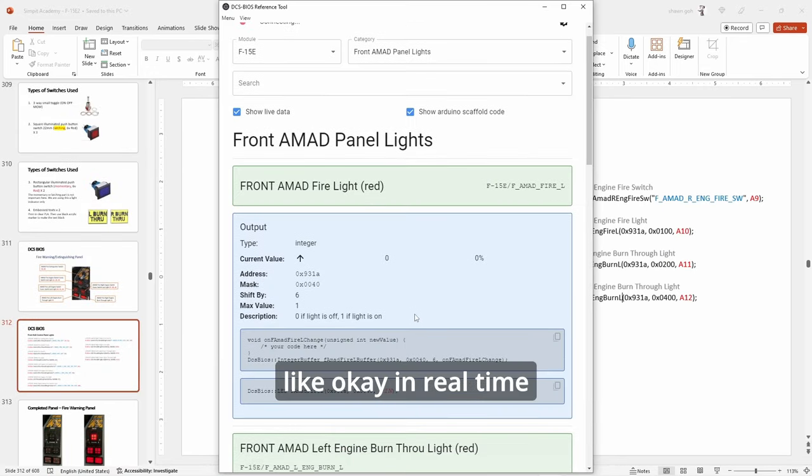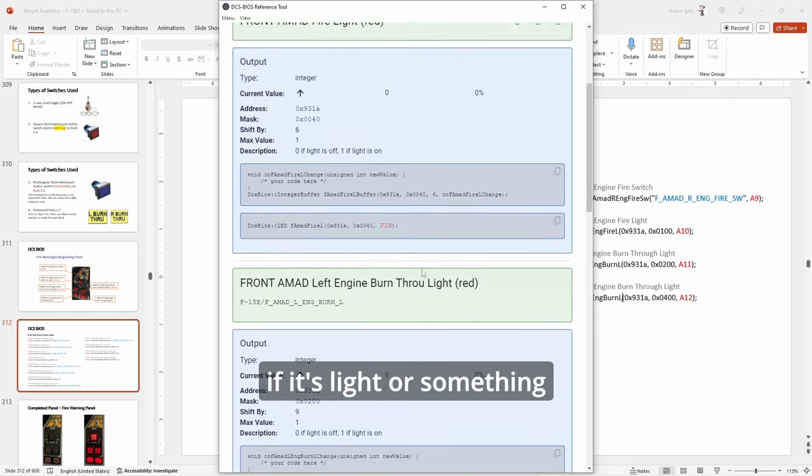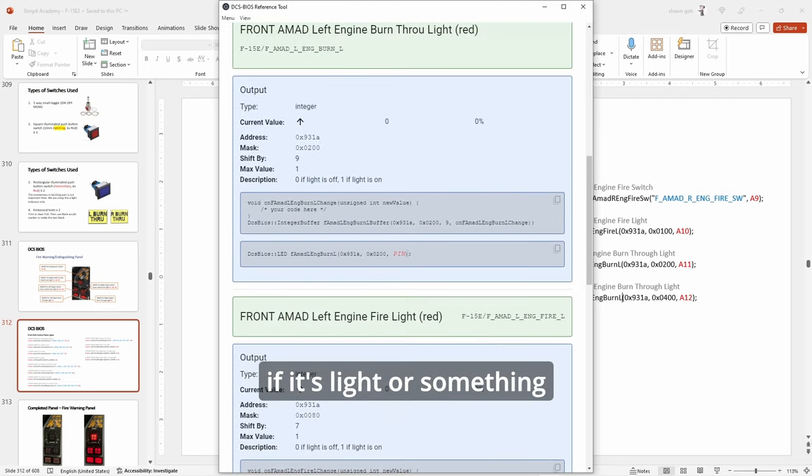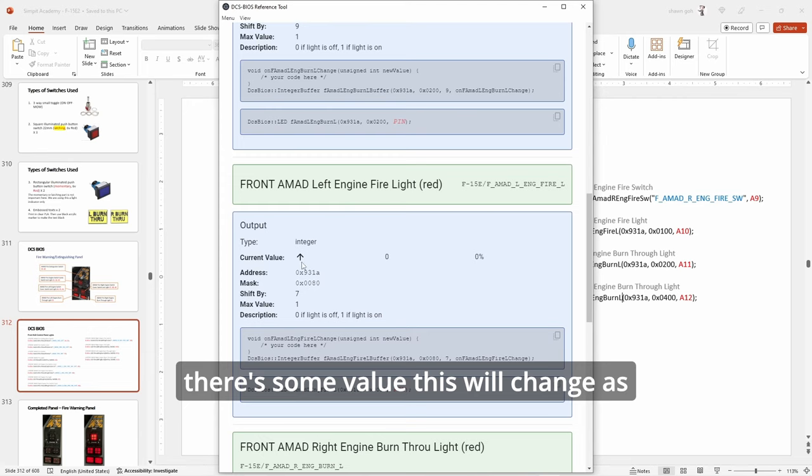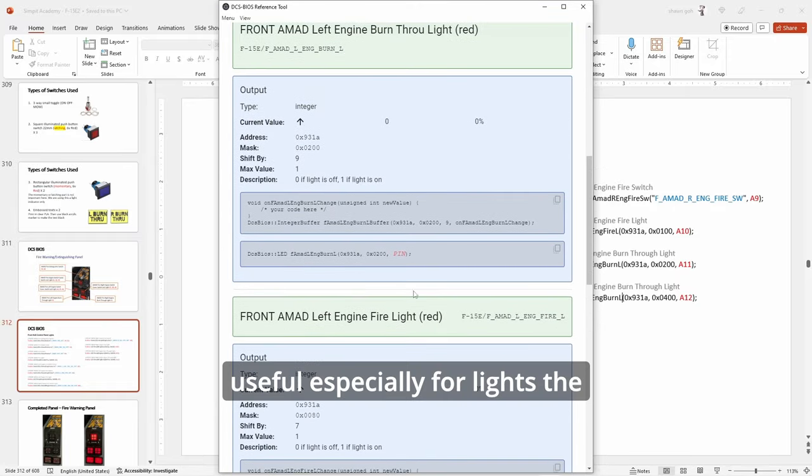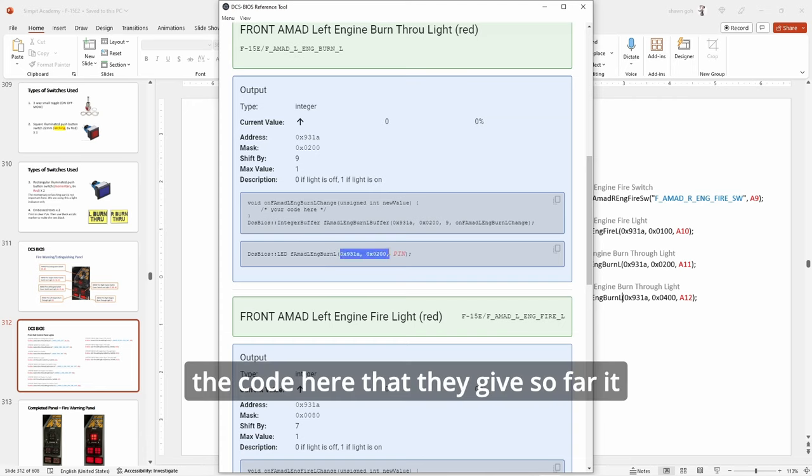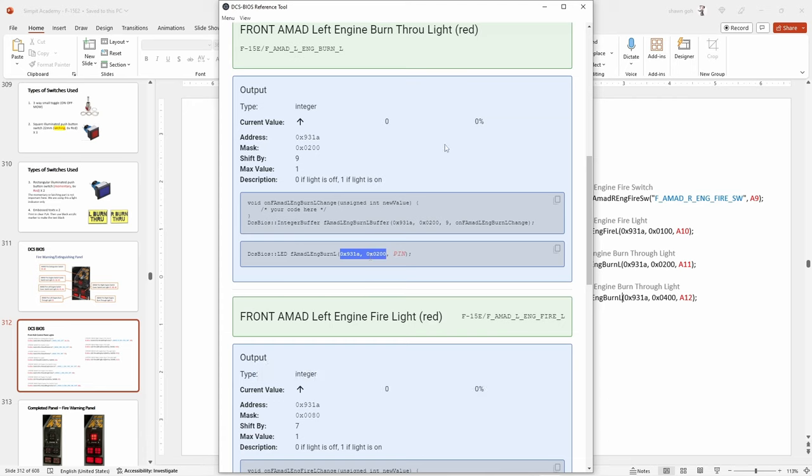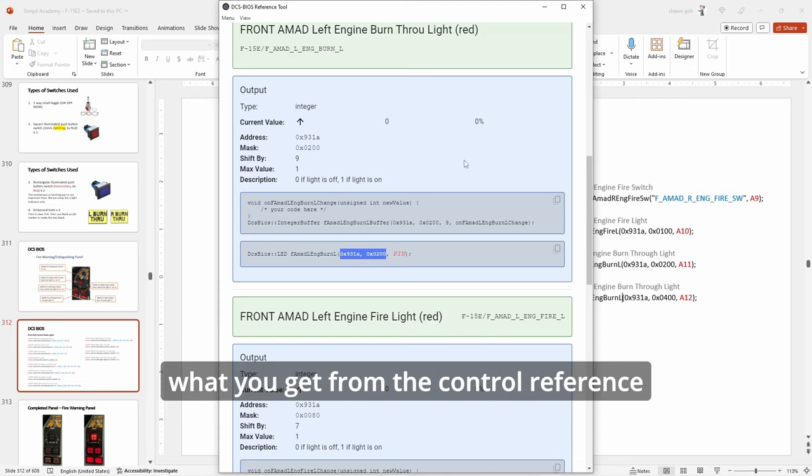This is how it looks like in real time. If it's light or something, there's some value, this will change as you toggle things in the game. This is Bored and it's very useful, especially for lights. The code here that they give, so far it has always been correct. And if it's different from what you get from the control reference, this will be more accurate.